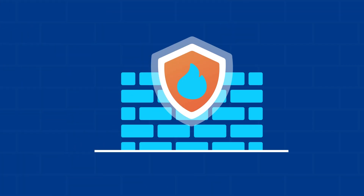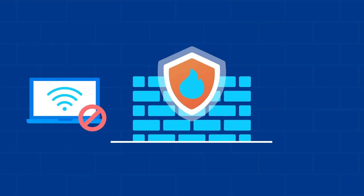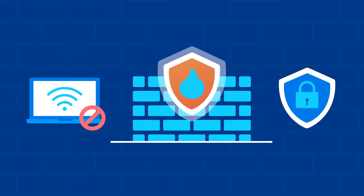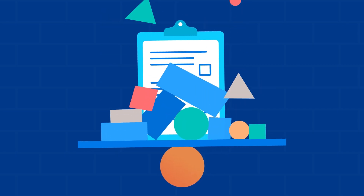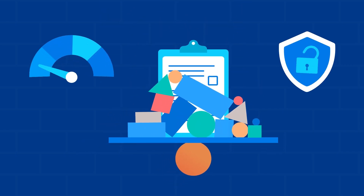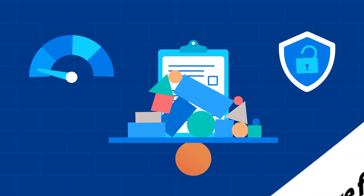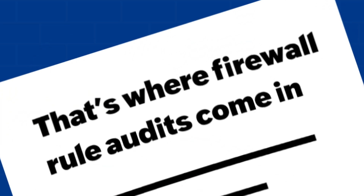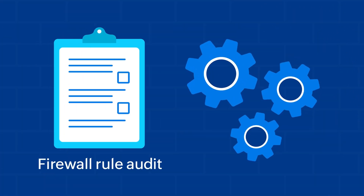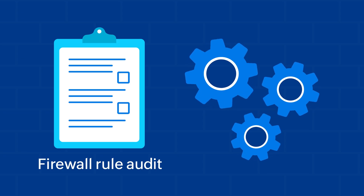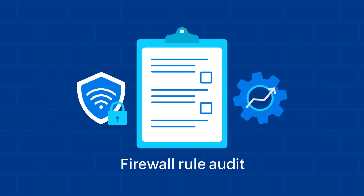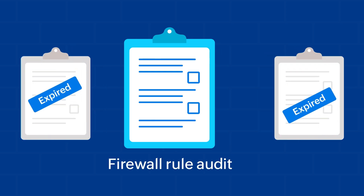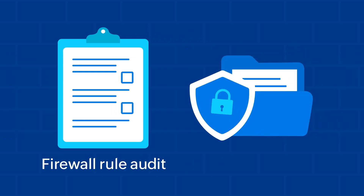Every network relies on firewalls to keep out unauthorized traffic and ensure security. But over time, firewall rules can become cluttered, slowing performance and creating security gaps. That's where firewall rule audits come in. A firewall rule audit is a critical process to make sure your firewall rules are working as intended, keeping your network secure and efficient by removing outdated rules and aligning with current security policies.